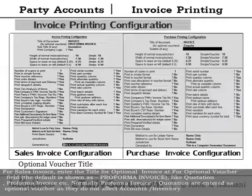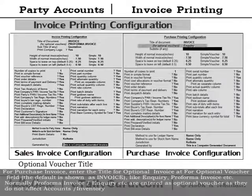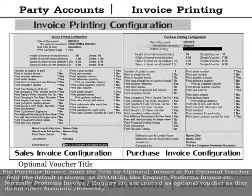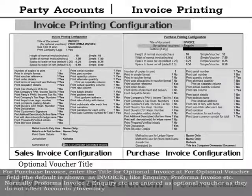Examples include quotation, pro forma invoice, etc. Normally, pro forma invoices and quotations are entered as optional vouchers as they do not affect accounts or inventory. For purchase invoices, enter the title for the optional invoice in the optional invoice field; the default is shown as 'Invoice'. Examples include inquiry, pro forma invoice, etc., which are entered as optional vouchers as they do not affect accounts or inventory.